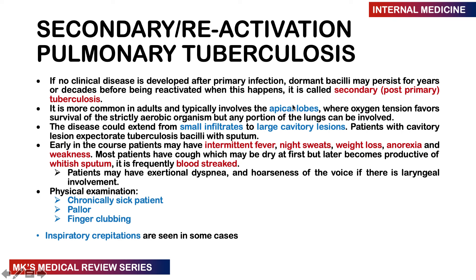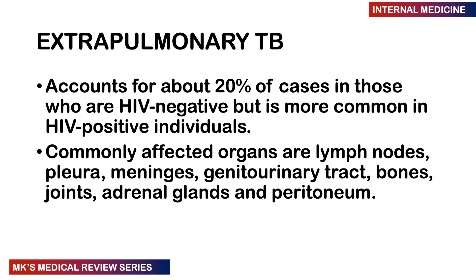Reactivation (secondary/post-primary) TB commonly affects the apices of the lungs due to higher oxygen tension, as this is a strict aerobic organism. Disease may extend causing small infiltrates or large cavities. Early on patients have intermittent fever, night sweats, weight loss, anorexia, and weakness. The cough starts dry but becomes productive with whitish or blood-stained sputum. Patients may have exertional dyspnea and hoarseness of the voice if the larynx is involved. On examination they may be pale, have finger clubbing, and inspiratory crepitations.